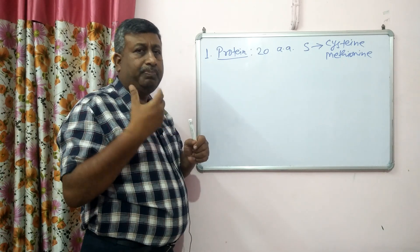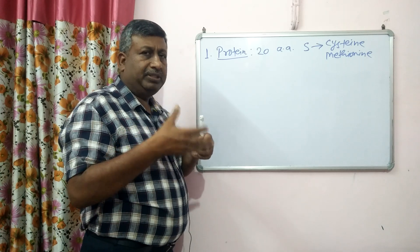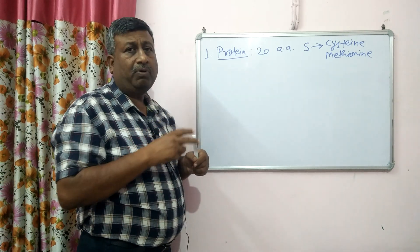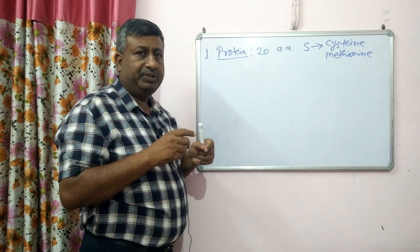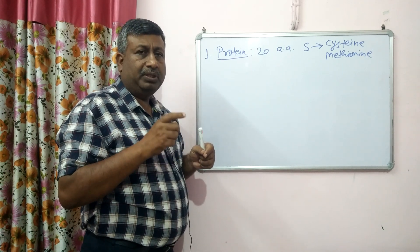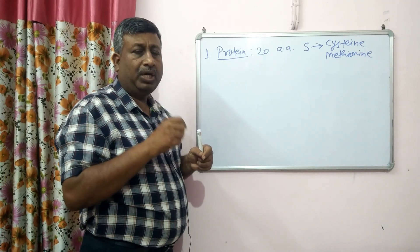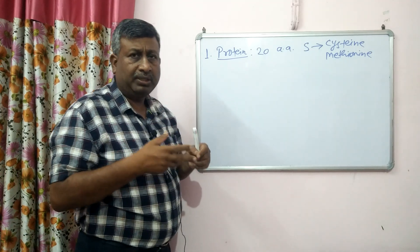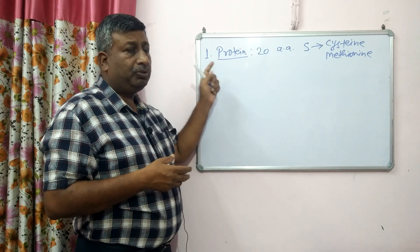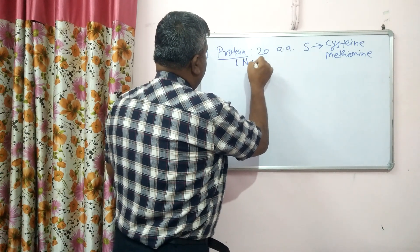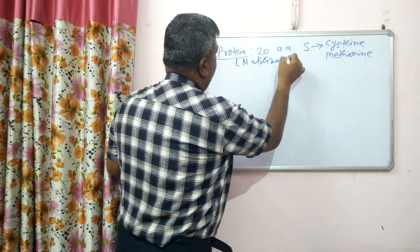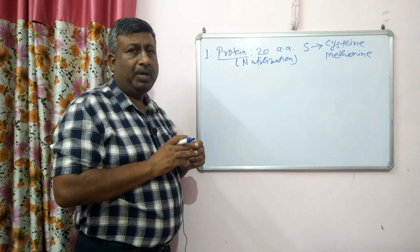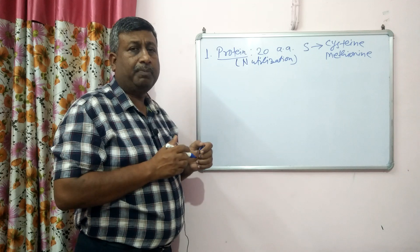If protein is not going to be formed properly, it means there is poor synthesis of protein and nitrogen will not be metabolized into protein. Nitrogen will remain in the plant as amide form, amino acid form, or other soluble forms. So the utilization of nitrogen is governed by sulfur — for proper utilization of nitrogen into protein, sulfur supply is essential.